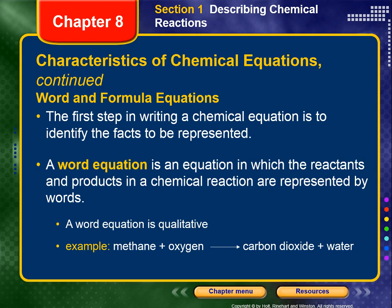Next, we're going to need to write a word equation and a formula equation for a given chemical reaction. The first step in writing a chemical equation is to identify the facts to be represented. A word equation is an equation in which the reactants and products in a chemical reaction are represented by words. A word equation is qualitative. For example: methane reacts with oxygen to yield carbon dioxide and water — no formulas, no coefficients, just names.